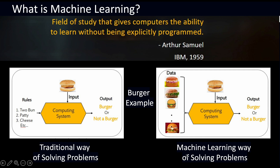Now let us see how this is solved the machine learning way. In the machine learning approach, instead of giving rules, we provide data — many images of burgers labeled as burgers. The computer analyzes the data, learns the features of a burger, and when given a new image, it predicts whether it is a burger or not, based on what it has learned.